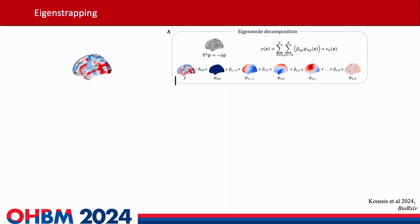I have no disclosures. So what is this method? Many of us are likely familiar with James Pang's eigenmodes paper, but I'm here to show you that eigenmodes can be used in a very different way. This is no different from what James did in the paper: we decompose a map into its spectral components — the coefficients beta — by projecting it onto the eigenfunctions of the Helmholtz equation, or what they termed geometric eigenmodes.